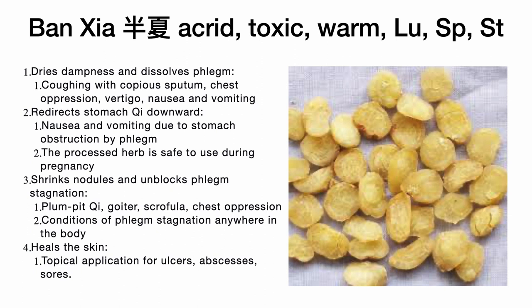Ban Xia treats coughing with copious sputum, chest depression, and also treats vertigo, nausea, and vomiting — since vertigo is another manifestation of phlegm obstruction. Ban Xia also has an effect on stomach qi, directing it downward. It treats nausea and vomiting due to stomach obstruction by phlegm.